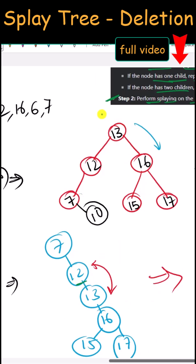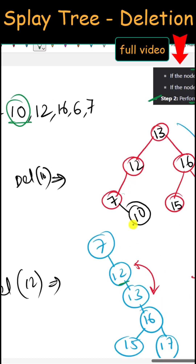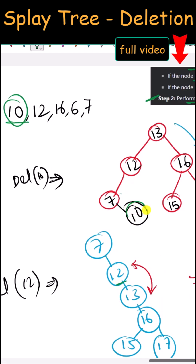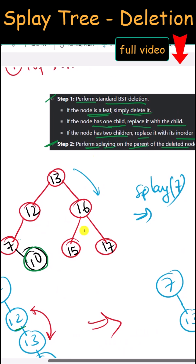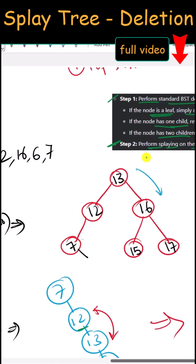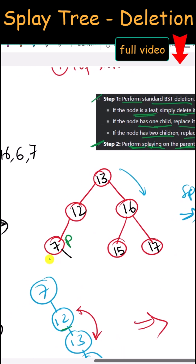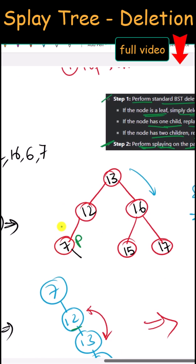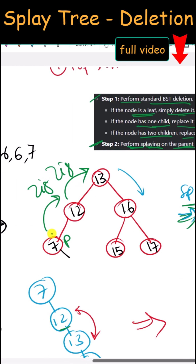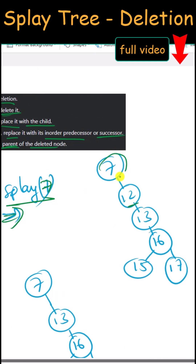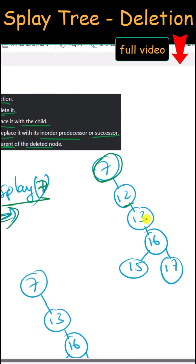Suppose we have this splay tree. First, let's delete the element 10. We find the element 10, and because it is a leaf node we can simply delete that node and then perform splaying on the parent. Here we perform splaying on 7, which means two right rotations — the zig-zig rotation. After two rotations, 7 becomes the root node and 12 and 13 are dragged down.